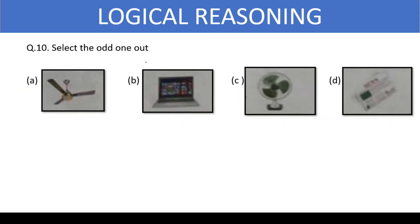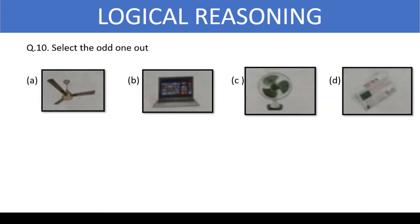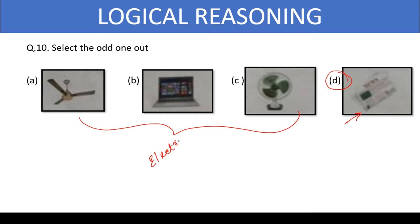Select the odd one out from the given options. The right answer is option D — the newspaper — because all the other items are electronic in nature and need electricity to run. So that's our right answer.